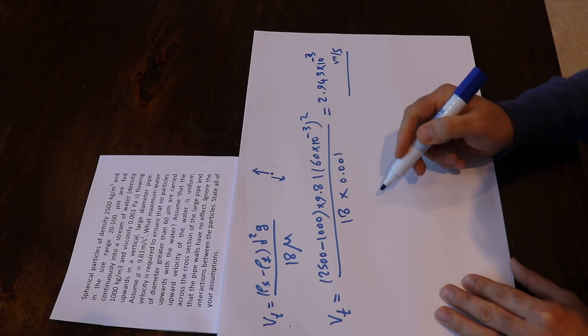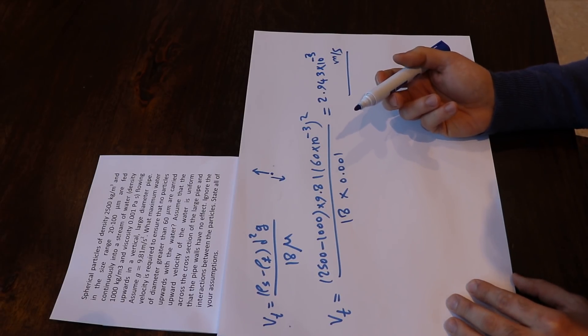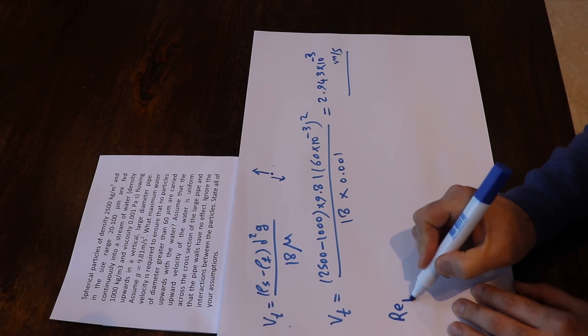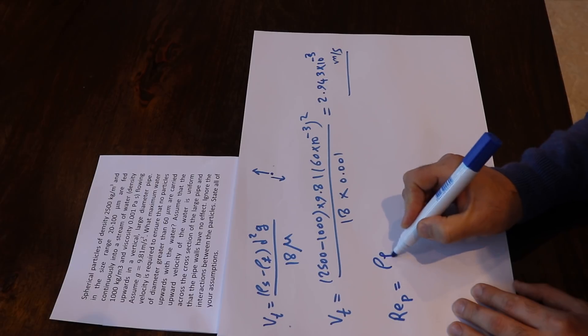Okay, and that's the terminal velocity, but here we have to check the Reynolds number to evaluate the applicability of Stokes law. We know that the Reynolds number = ρf × vt × d / μ, which will equal